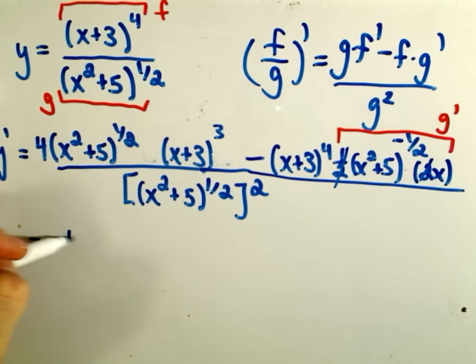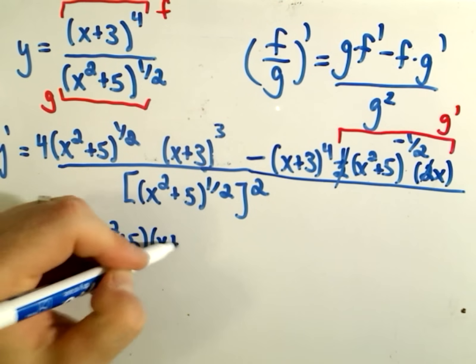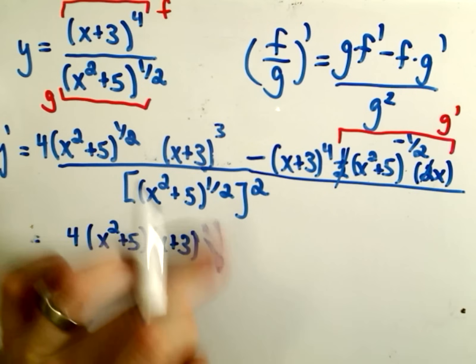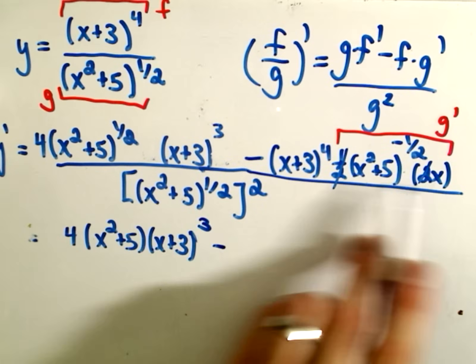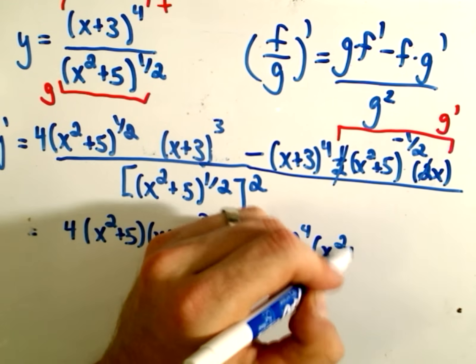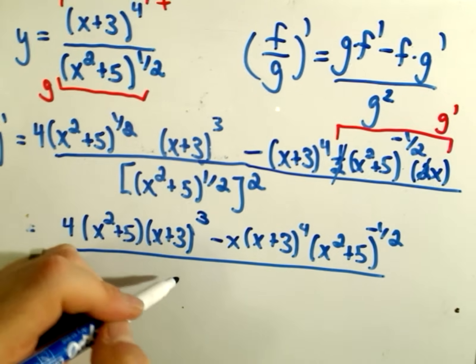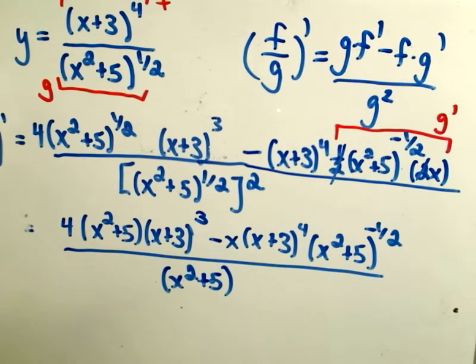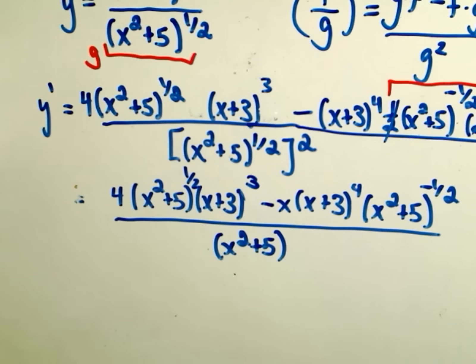Notice over here, the 1 half and the 2 would just cancel out. So I'm going to rewrite it just to clean it up. So we have 4, x squared plus 5, x plus 3 cubed. Why did I say cubed and write a 2? And then I'm going to pull my x out front. We'll have x plus 3 to the 4th. And then x squared plus 5 to the negative 1 half. The denominator will just be x squared plus 5.